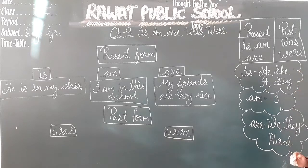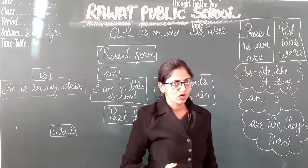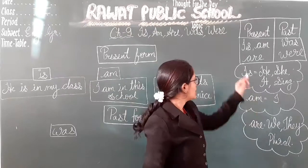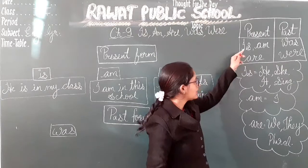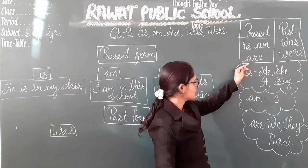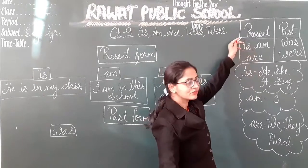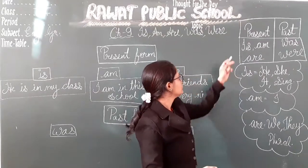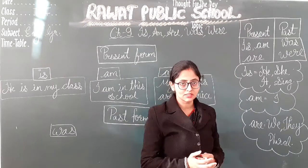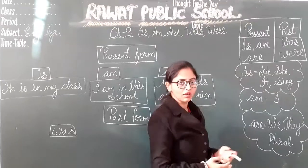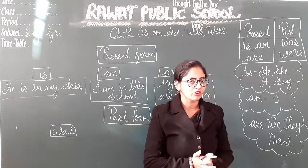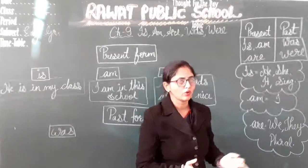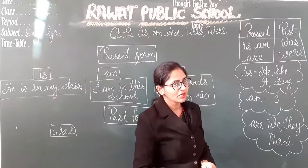First I want to tell you about the verb forms. We use is and are with the present form. Present is when we are talking about just now or just today — when we are talking about today and now, that time we will use is and are.